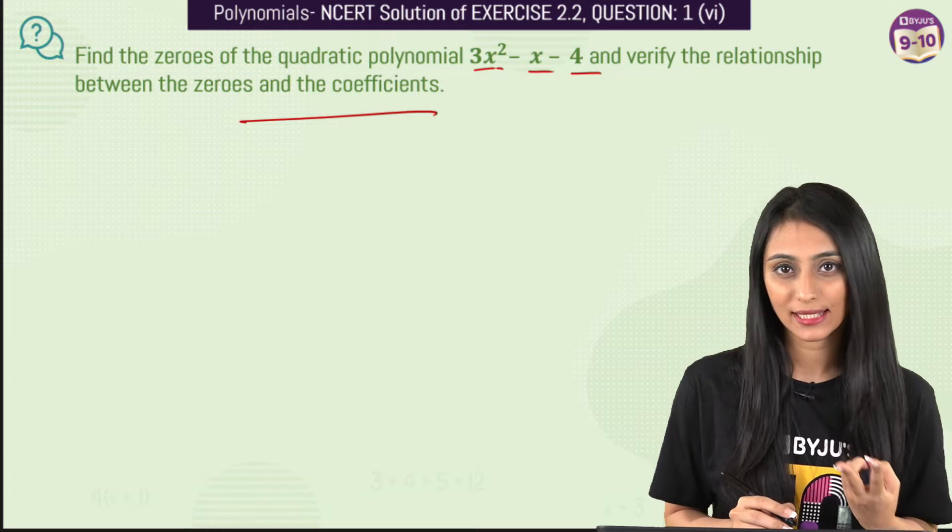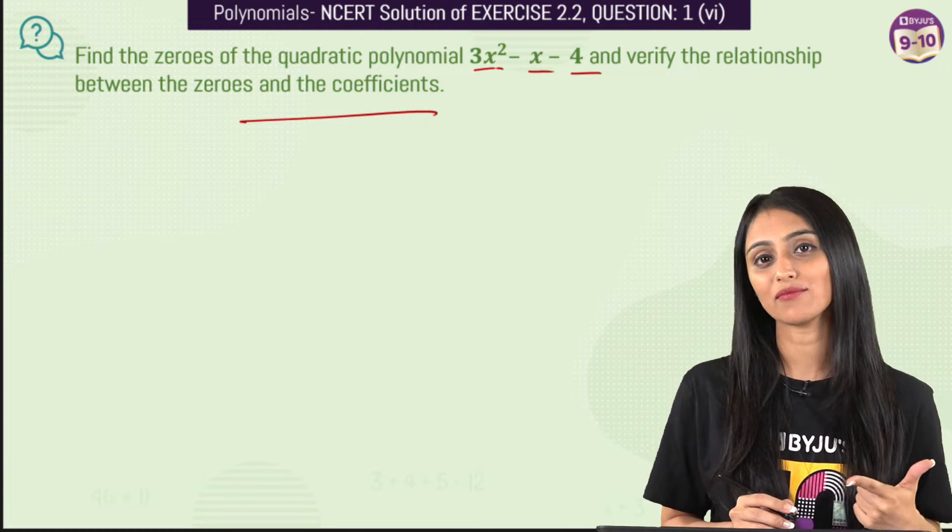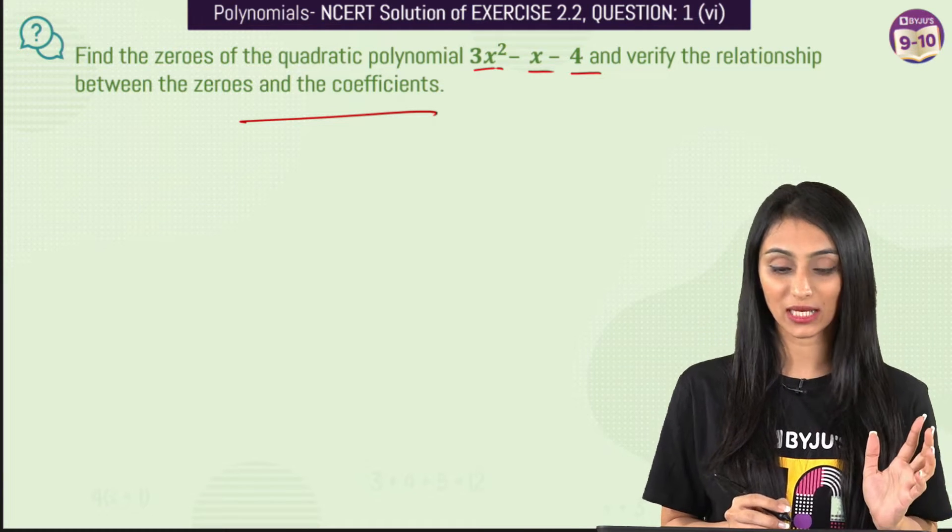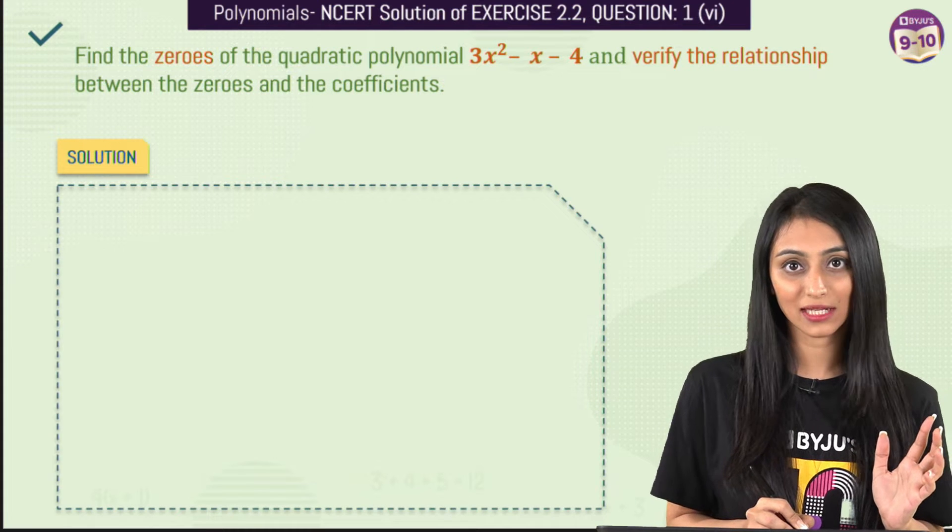So basically there are two things in the question. First we have to find the zeros, second we have to verify the relationship between zeros and coefficients. So first let's find out the zeros for this quadratic polynomial.